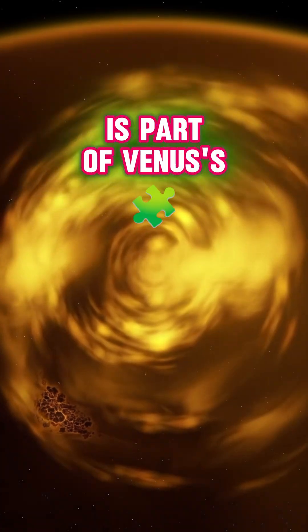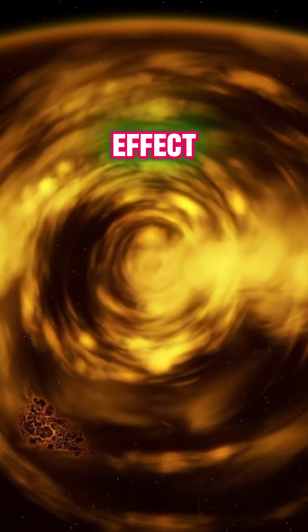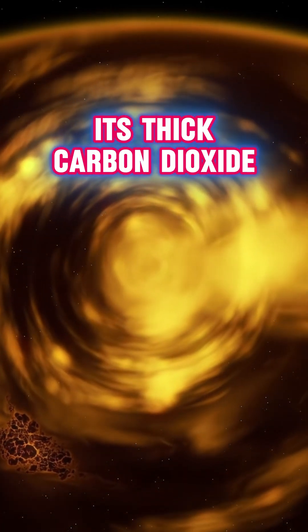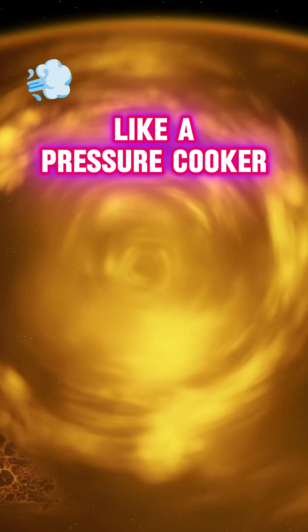This bizarre weather cycle is part of Venus' extreme greenhouse effect. Its thick carbon dioxide atmosphere traps heat like a pressure cooker.